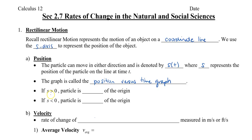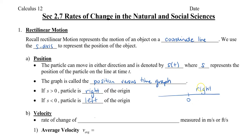If the position s is greater than 0, then we're going to say that the particle is right of the origin. And if s is less than 0, we're going to say the particle is left of the origin. So if the origin is here in the middle, then this would be our right side, and this would be our left side.